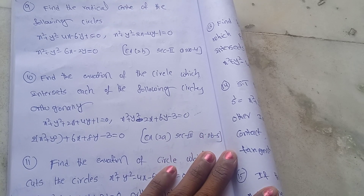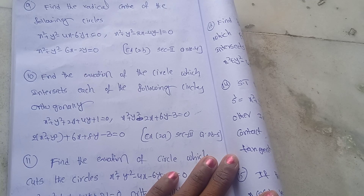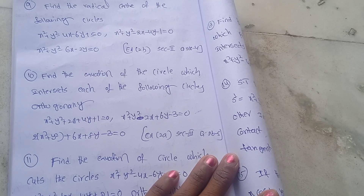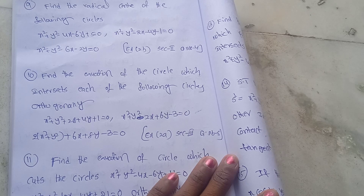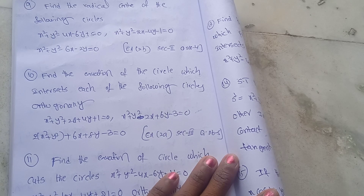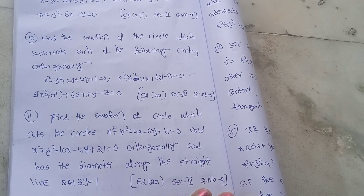Next, find the equation of the circle which intersects each of the following circles orthogonally: x² + y² + 2x + 4y + 1 = 0; x² + y² − 2x + 6y − 3 = 0; and 2(x² + y²) + 6x + 8y − 3 = 0. This is Exercise 2A, Section 3, Question 5.